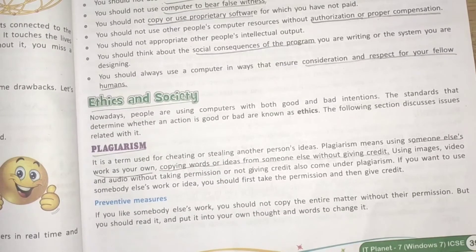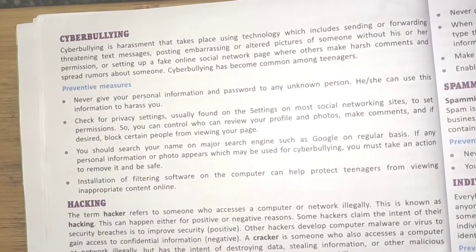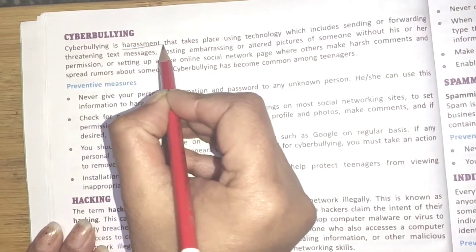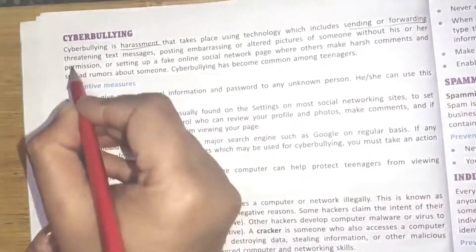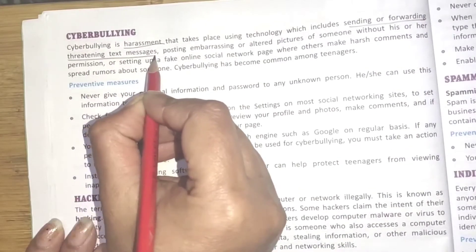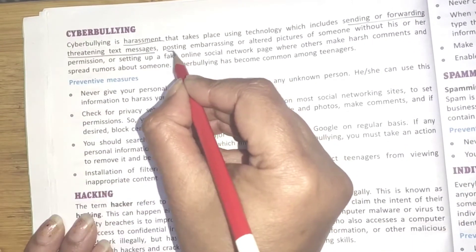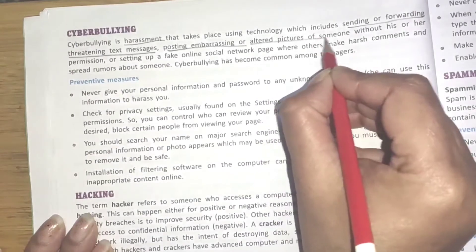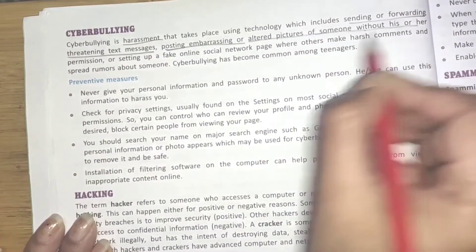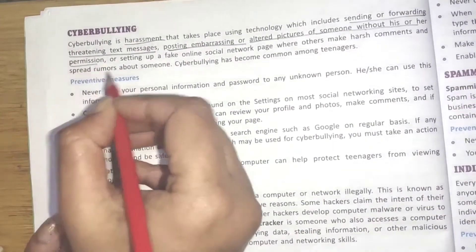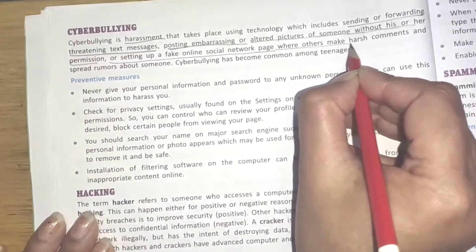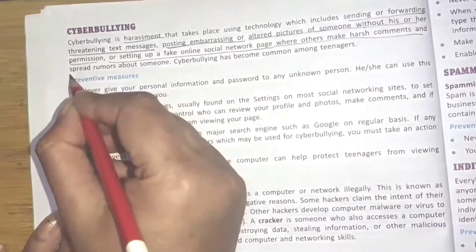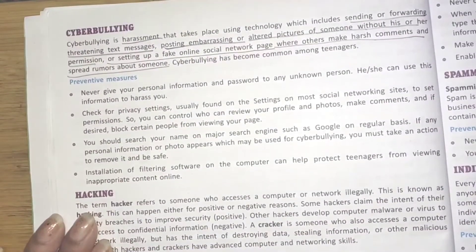Next is cyberbullying. Cyberbullying is basically harassment that takes place using technology, including sending or forwarding threatening text messages, posting embarrassing or altered pictures of someone without permission, or setting up a fake online social network page where others make harsh comments and spread rumors about someone.